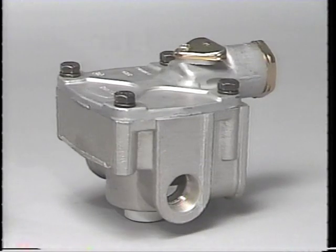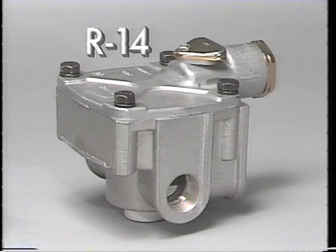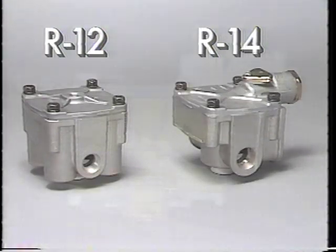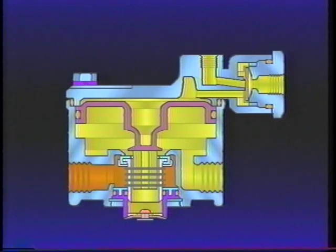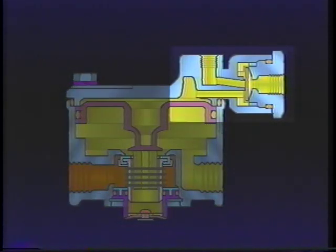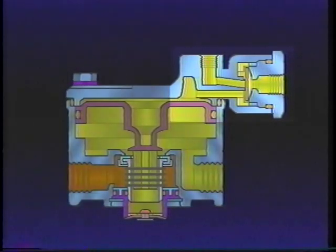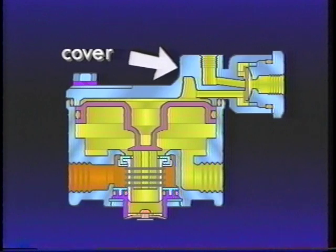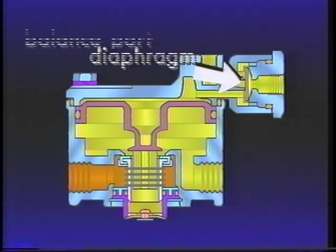The Bendix R14 relay valve is essentially the R12 discussed in part 2 of this series. The lower half of both valves are interchangeable. The R14 has an additional anti-compounding feature built in. The components for the anti-compounding feature are contained in the cover and consist of a diaphragm and balance port.